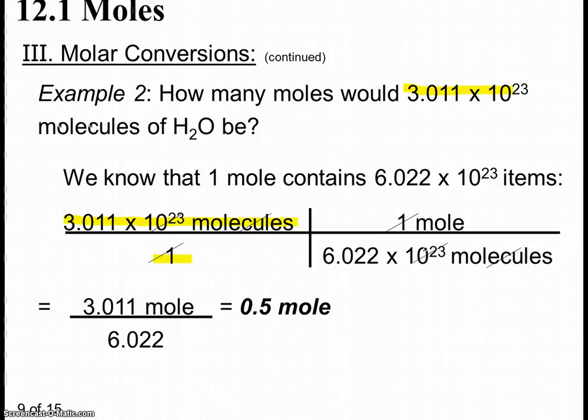And we want to know how many molecules, so we're going to put in Avogadro's number worth of molecules per mole. And we're going to put the molecules on the bottom this time, because we want our molecules divided by molecules to cancel. This is nice, because we can also cancel the 1s. We can also cancel the 10 to the 23. And we're left with much less. All we're left with is the 3.011 mole over 6.022, which is half.